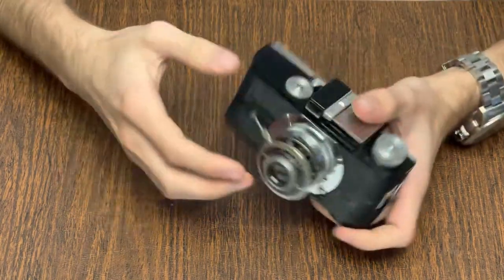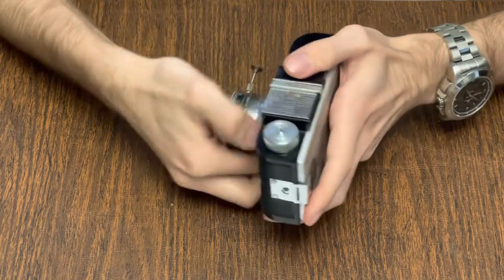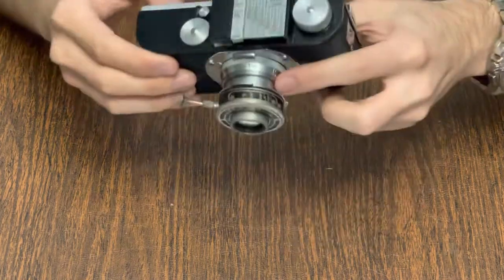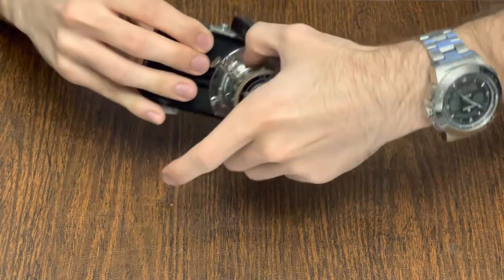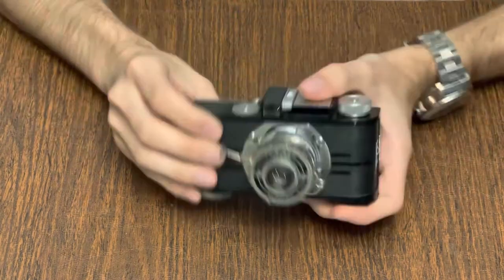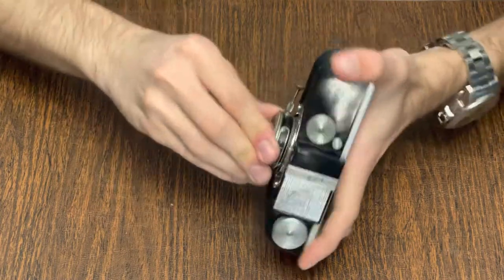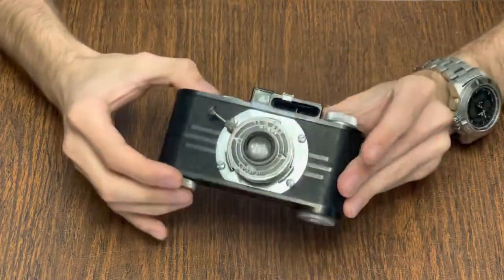The lens barrel has a focusing ring and it'll focus down to 18 inches or one and a quarter feet all the way to infinity which is quite impressive even for today, and the lens barrel will actually collapse into the body to make it more pocketable.